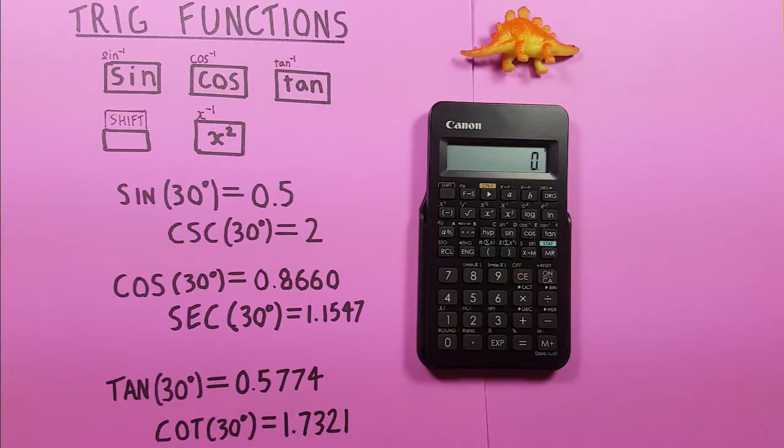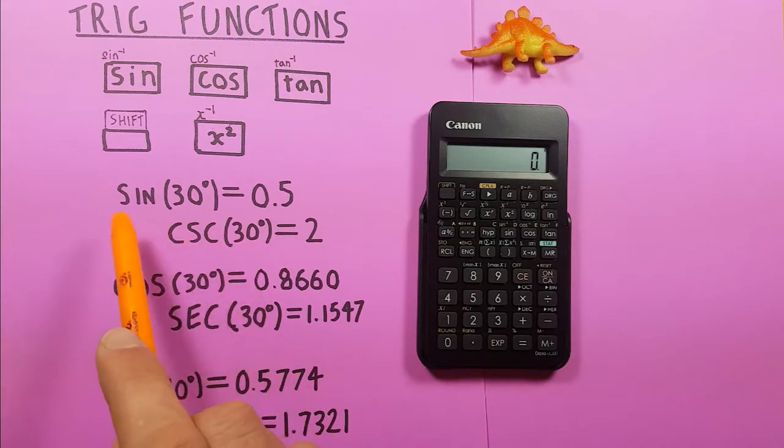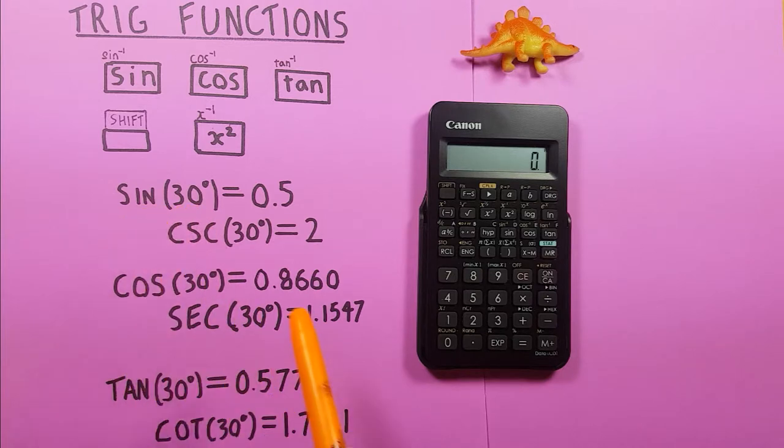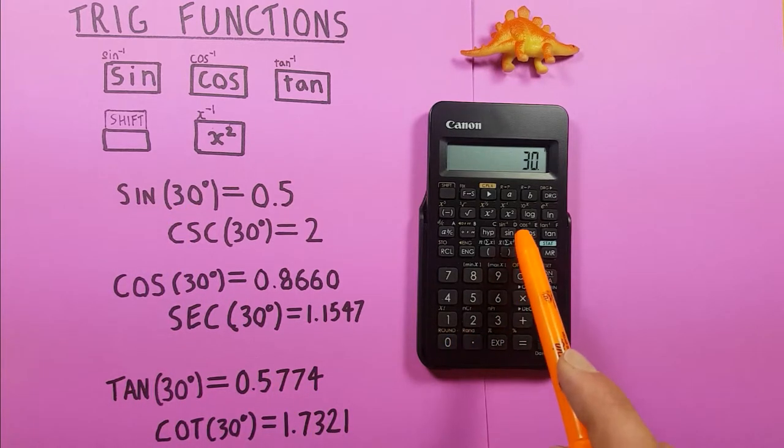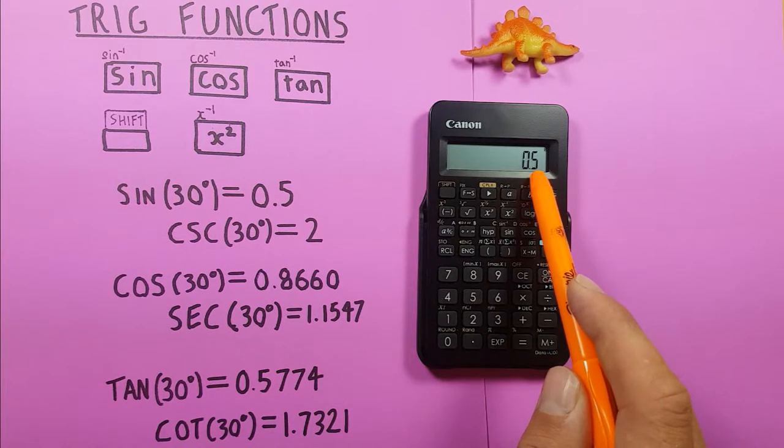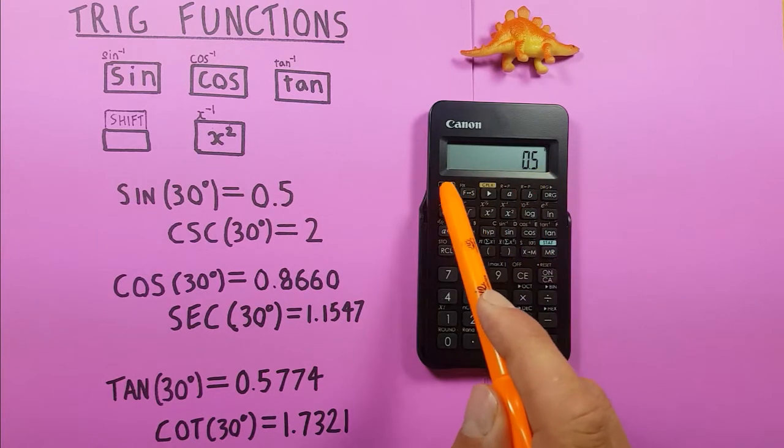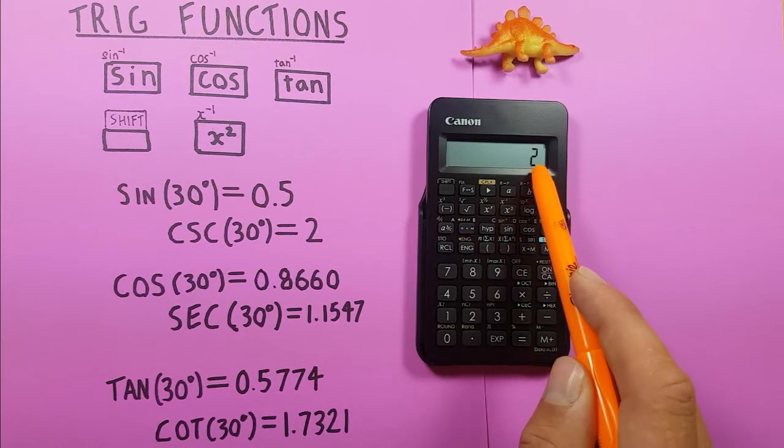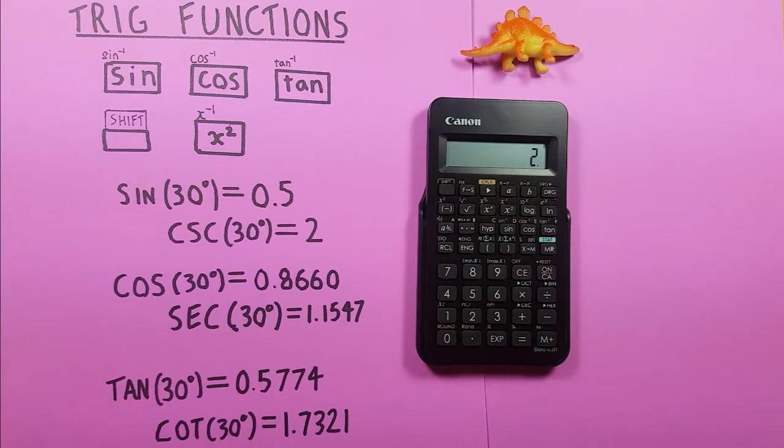We can also find the cosecant, secant and cotangent of a number by inverting the results of the corresponding function. So for cosecant we first find the sine of the value, so for our example we'll do sine of 30. There's that 0.5 and then we invert it by pressing shift x squared with the shift function of x to the power of negative 1, and this gives us 2 which is correct, the cosecant of 30 degrees is equal to 2.